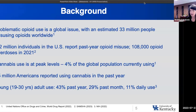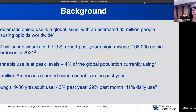Just to provide a little background: this group is well informed about the risks and dangers of opioid misuse and their consequences. As we're dealing with the opioid epidemic here in the U.S. and across the globe, cannabis use is also at peak levels globally. The current estimate is that 4% of the global population currently uses cannabis. 55 million Americans reported using cannabis in the last year, compared to 9.2 million individuals reporting past-year opioid misuse.